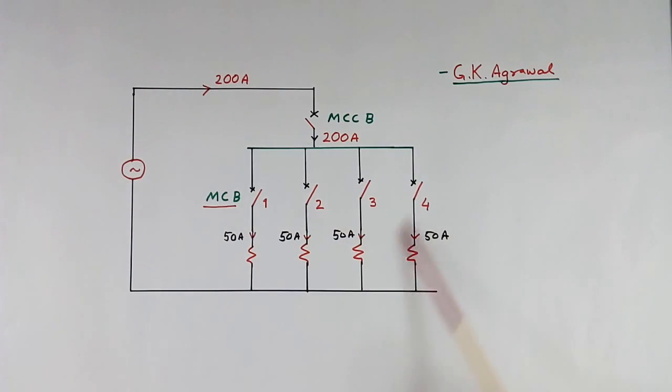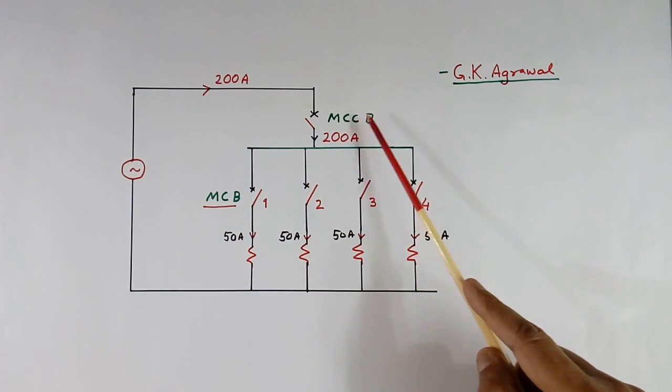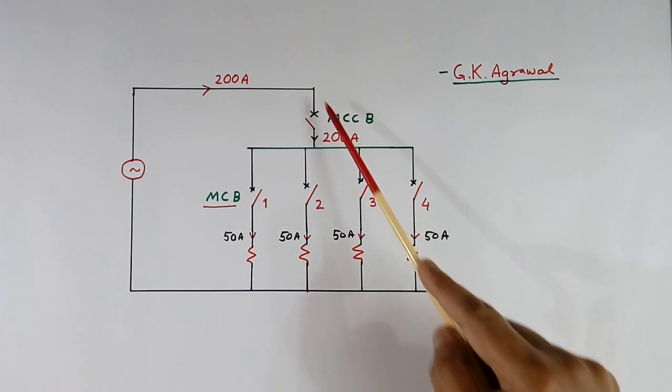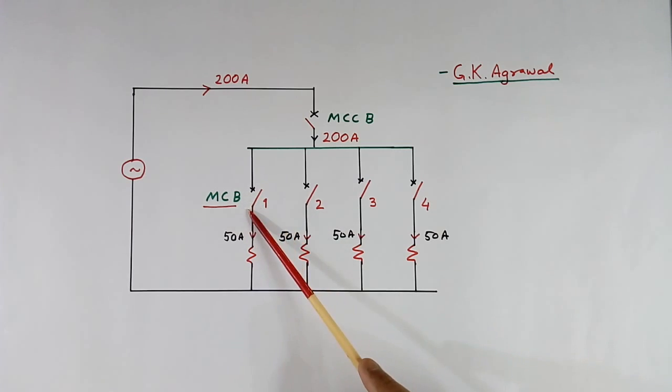Here I have shown in a big system how we use MCCB and MCB together. There is only one MCCB connected here, and there are four MCBs: 1, 2, 3, 4, for four different loads.